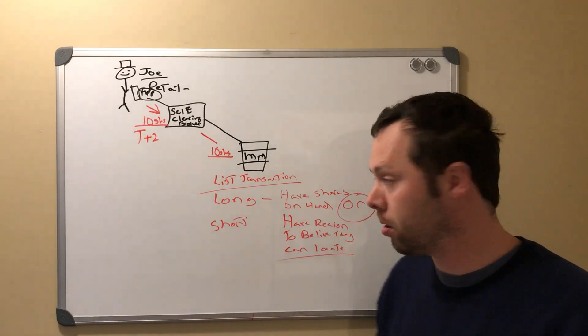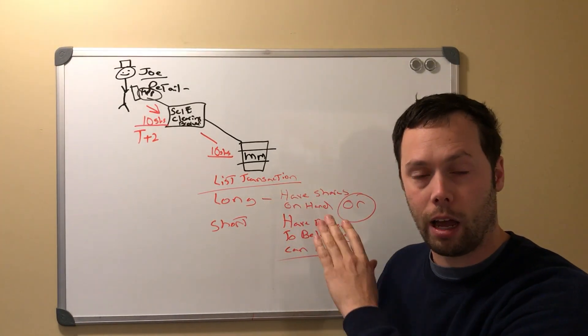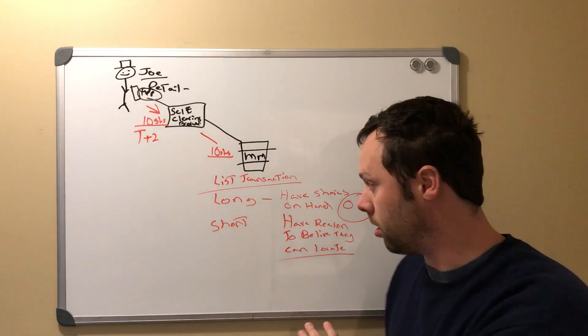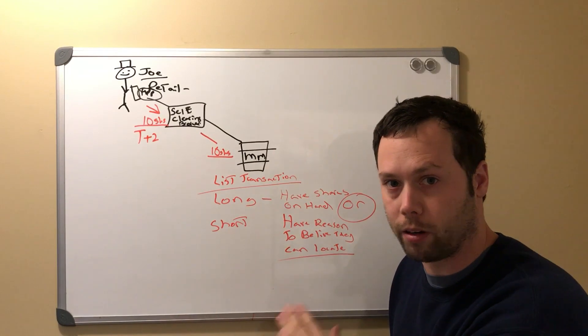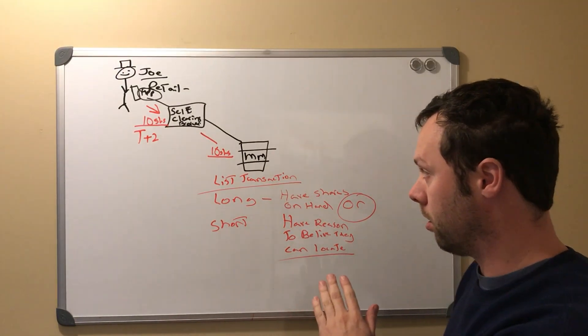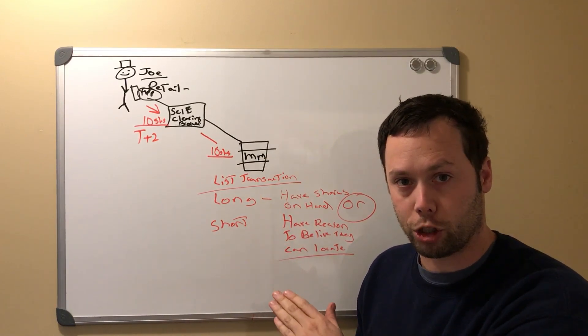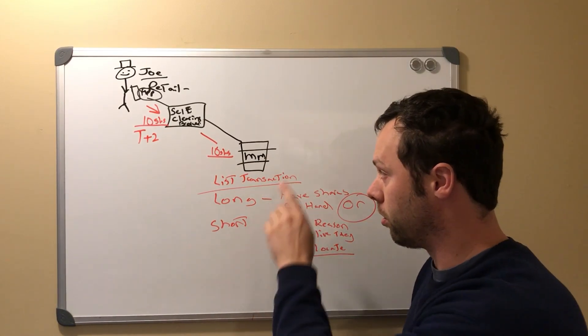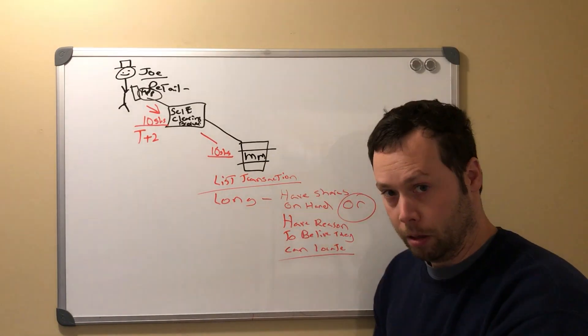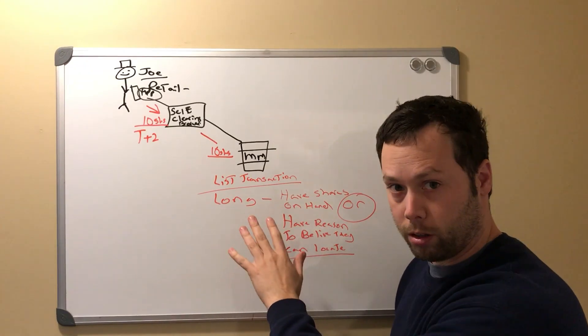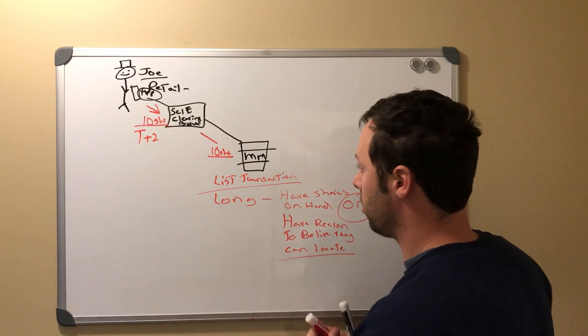Or they have reason to believe they can locate shares by settlement. It's extremely important that we understand that caveat within how the long transaction is listed. We're not even going to pay attention to short, because I don't think that's what's happening. Market makers are allowed to say I don't have any shares, I'm going to sell them as short. What they're going to do is they're listing them as long.